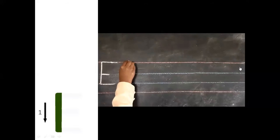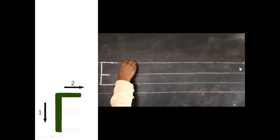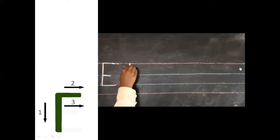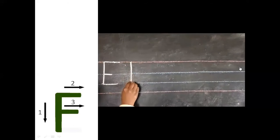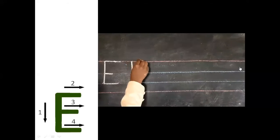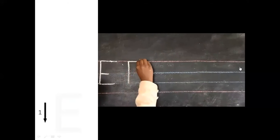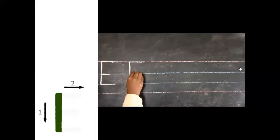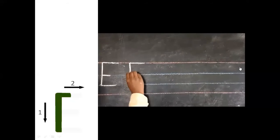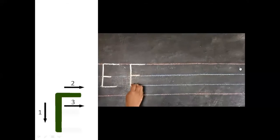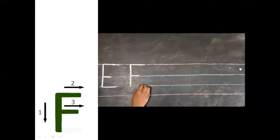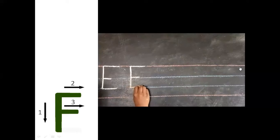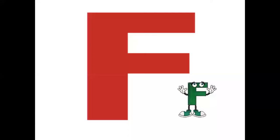Let's see once again. We draw a standing line from the first to the third line. And from the standing line, we draw sleeping lines on the first line, then another sleeping line on the second line, and then another sleeping line on the third line. That makes our capital E.